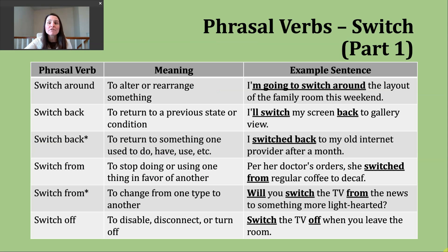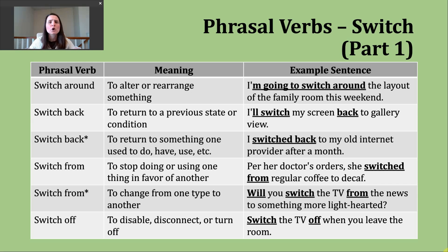Now today we're going to focus on phrasal verbs that use switch, because there are so many. You can probably tell from my notes I'm going to have kind of two pages of notes to share with you. Let's begin discussing our first phrasal verb, and that is to switch around. This generally means we're altering something — we're rearranging, putting things in different places. An example: I'm going to switch around the layout of the family room this weekend.